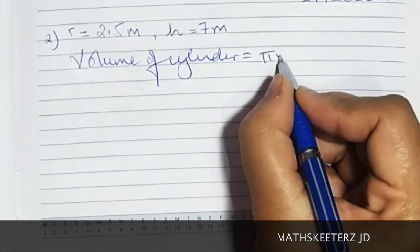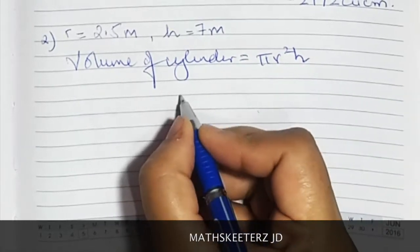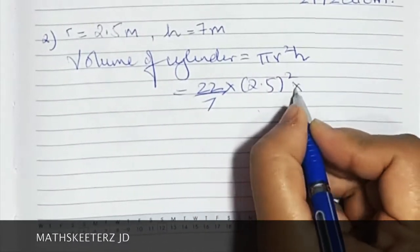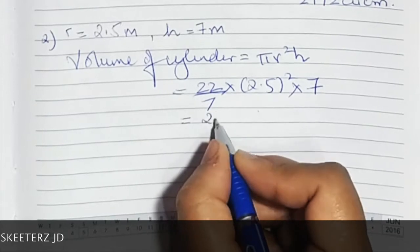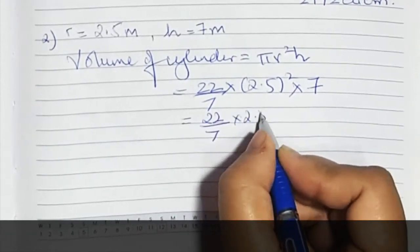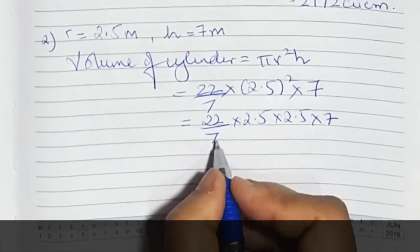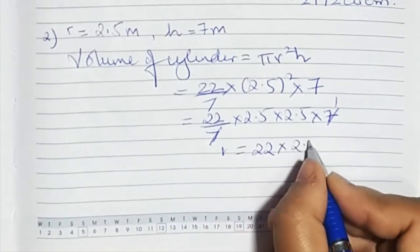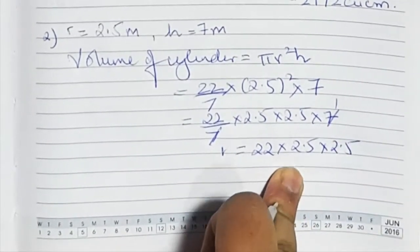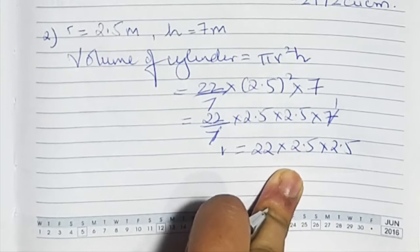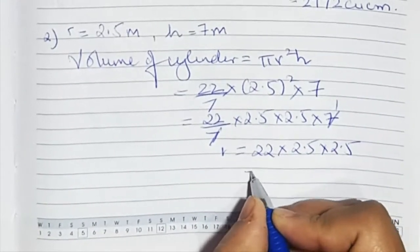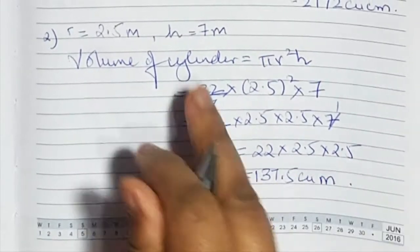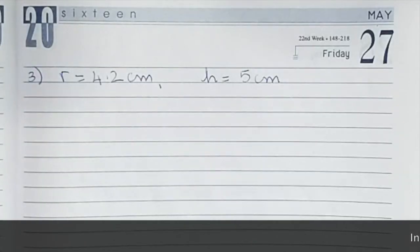The next sum: volume of cylinder is pi r squared h. Insert the values — that is 22 upon 7 into 2.5 squared into height 7. So, 22 upon 7 into 2.5 into 2.5 into 7. After multiplying, the final answer is 137.5 cubic meters. Since it is in meters, we write the answer in cubic meters.